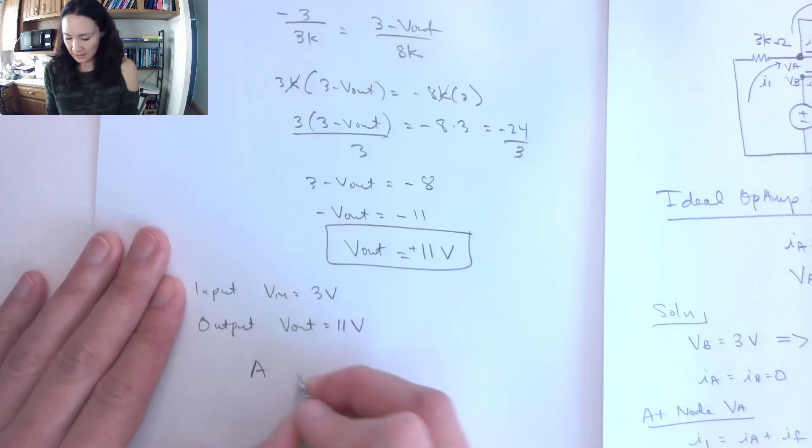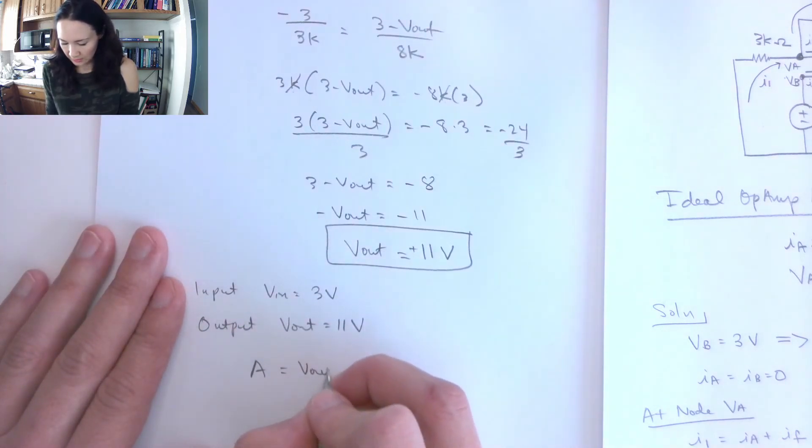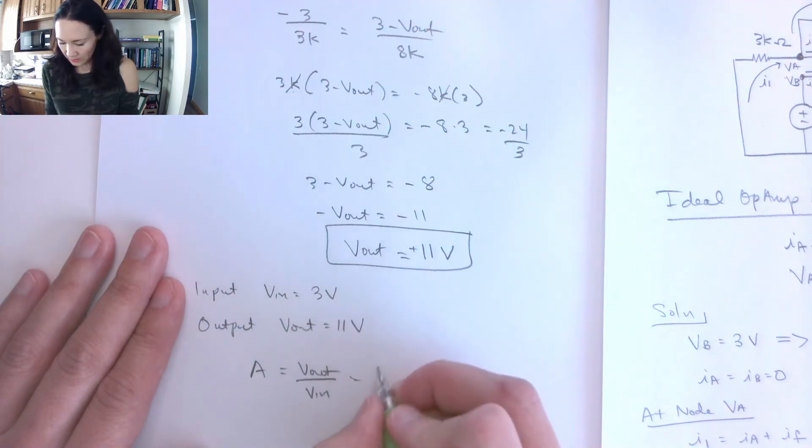which is defined as Vout over Vin, would be 11 over 3.